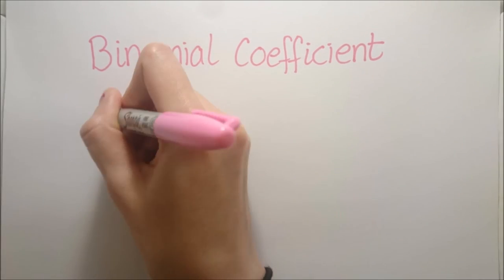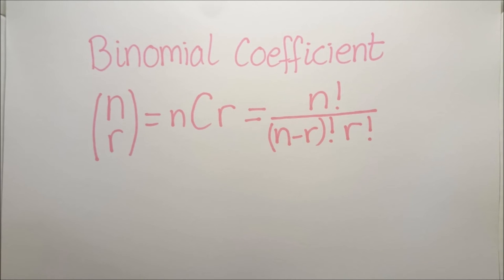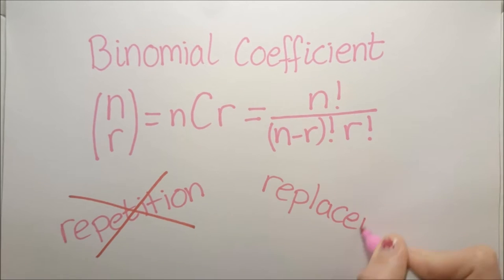Binomial coefficient. n choose r equals n factorial over r factorial times n minus r factorial. This is the number of ways to choose r items from a collection of n items without repetition or replacement.